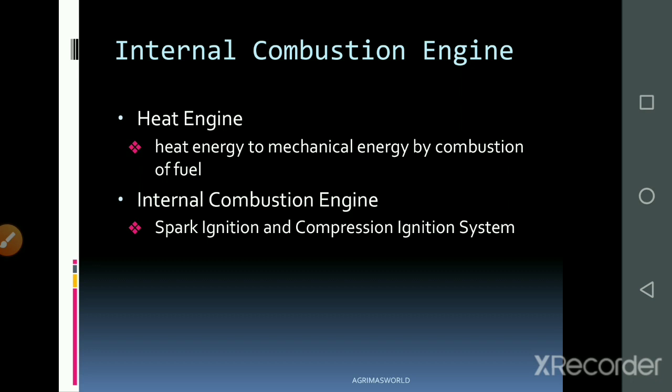The basic difference between engine types: in the case of a spark ignition system, the fuel and air mix, are compressed, and then an electric spark is applied for combustion. In the compression ignition engine, the fuel is injected into highly compressed air, and the pressure itself ignites the fuel.